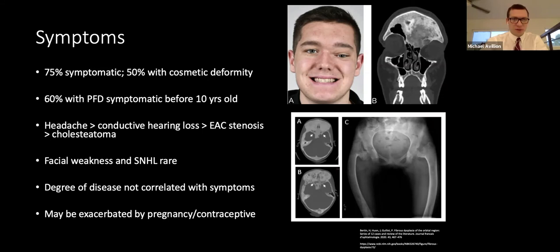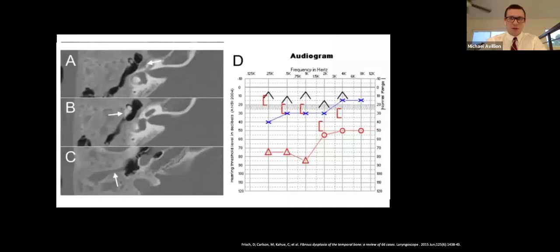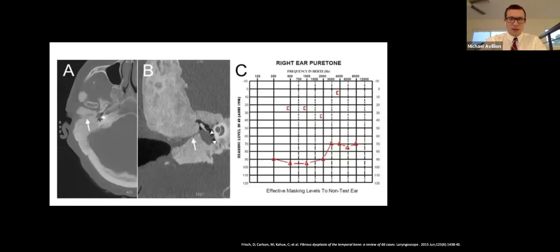From a neurotologic standpoint, headache is the most common symptom followed by conductive hearing loss, ear canal stenosis, and cholesteatoma. Facial weakness and sensorineural hearing loss are very rare, and the degree of disease does not correlate with symptoms. The disease may be exacerbated by pregnancy or oral contraceptives, suggesting estrogen's involvement. An audiogram of a 15-year-old male with monostatic disease demonstrates sparing of the fallopian canal, malleus fixation in the epitympanum, and external auditory canal stenosis.